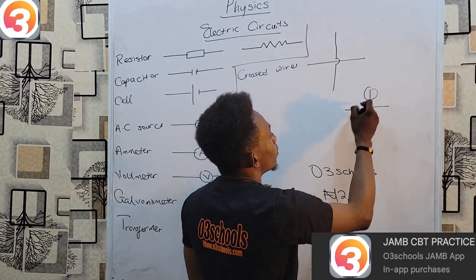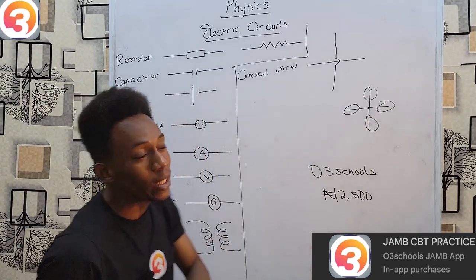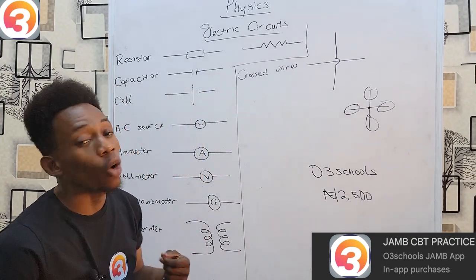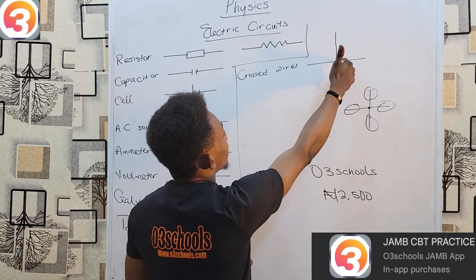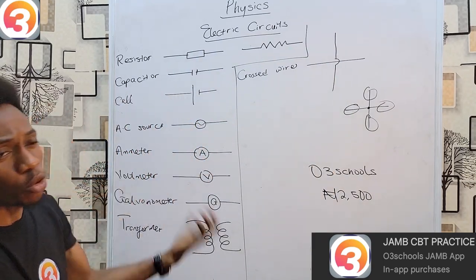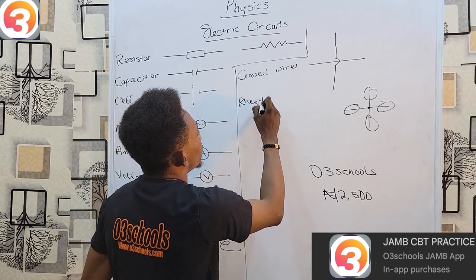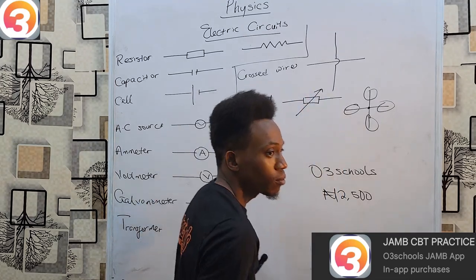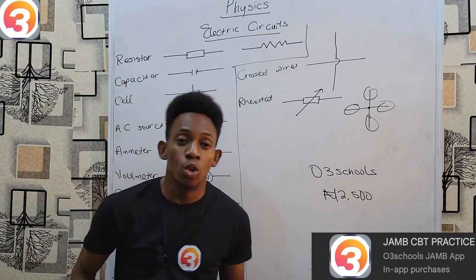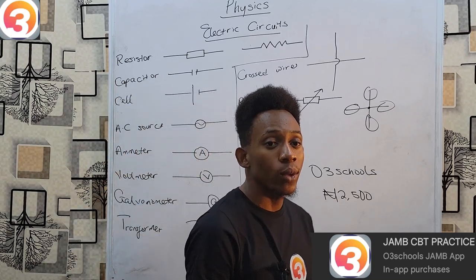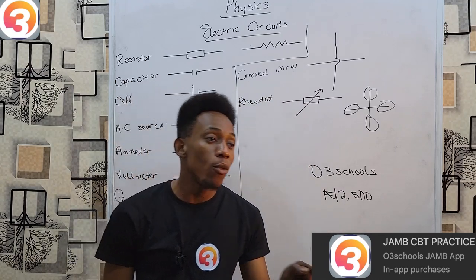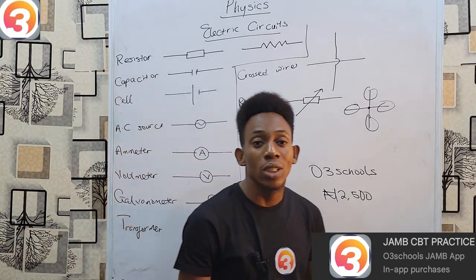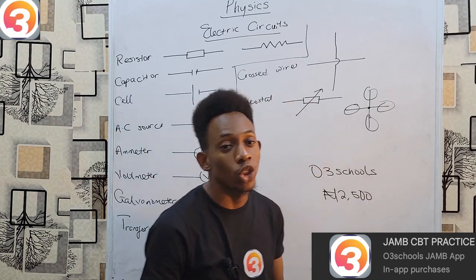When wires do not share any junction or connection, there is no electrical link between them at that point in the circuit. There is also a rheostat or variable resistor — a resistor whose value can be altered. A good example is the speed control on your ceiling fan or standing fan: by moving the switch you are varying the resistance, which varies the current to the fan and thus its speed.